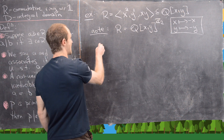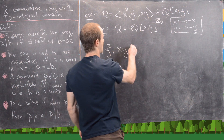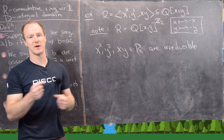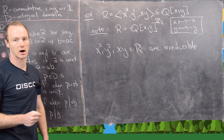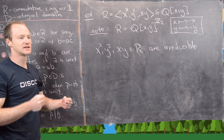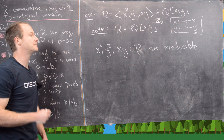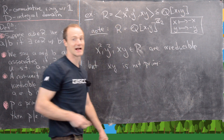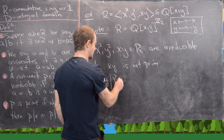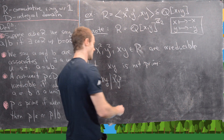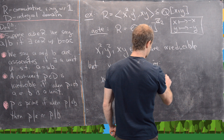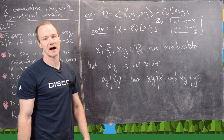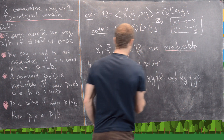Now notice that x², y², and xy are irreducible in R — not irreducible inside the bigger ring Q[x,y], but irreducible within R, because you can't write x² as a product of two elements unless one of them is a unit. However, xy is not prime. Notice that xy divides x²·y² (it's just xy times xy), but xy does not divide x² and xy does not divide y². So it divides the product but not either factor — a nice example of something irreducible but not prime.